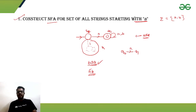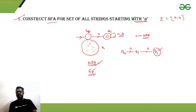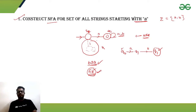In state q1, if we get small 'b', we stay in state q1 itself because of the self-loop. So we are reaching the final state starting from the initial state given the whole string. The string 'ab' is accepted by the given NFA.